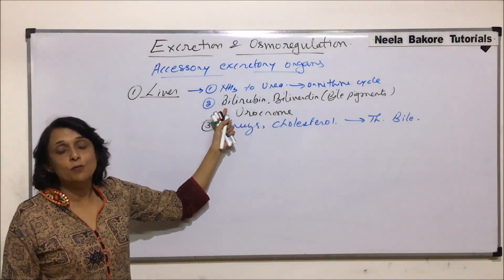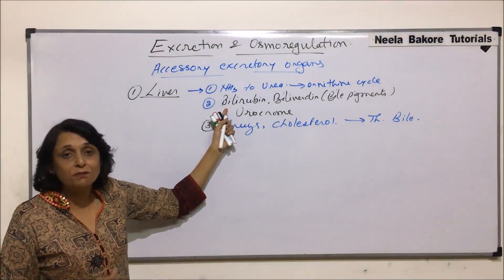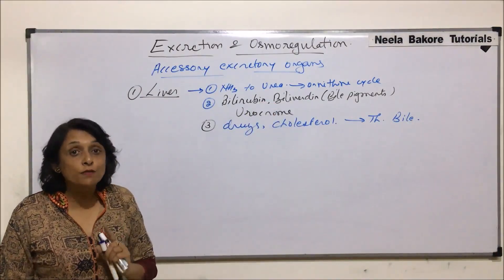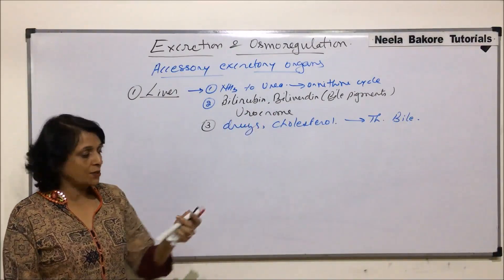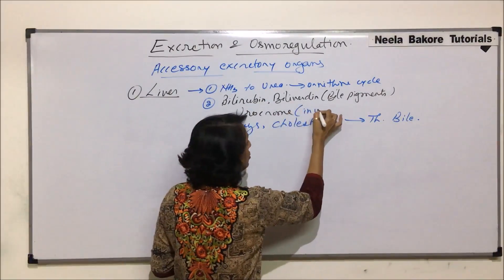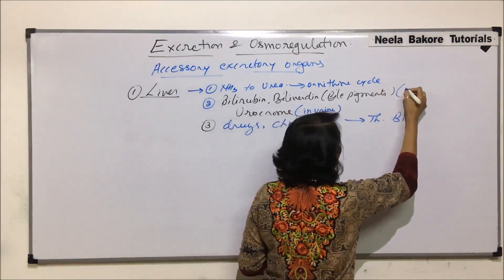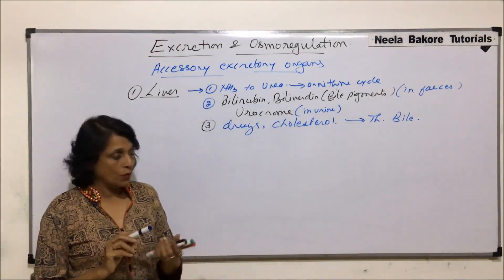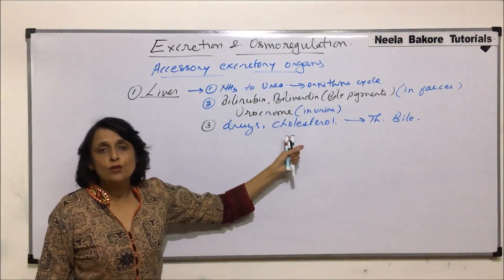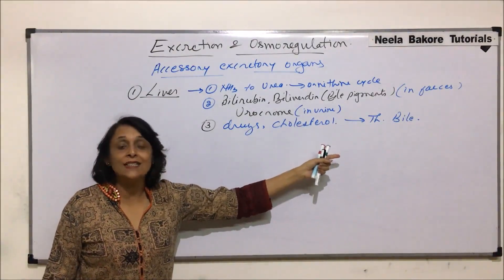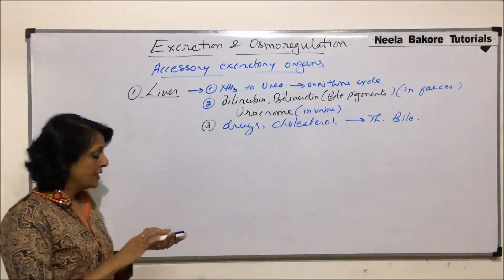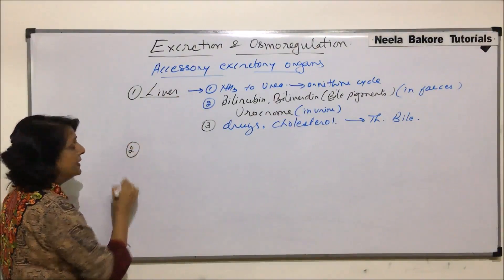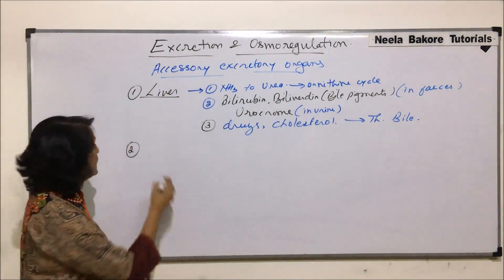Hemoglobin breakdown results in formation of certain pigments that are not required by the body. Bilirubin and biliverdin are excreted out along with feces, while urochrome is excreted out in urine. Certain drugs and cholesterol are also eliminated by liver in bile. So, liver plays an important role as an accessory excretory organ. The next structure which helps is skin.